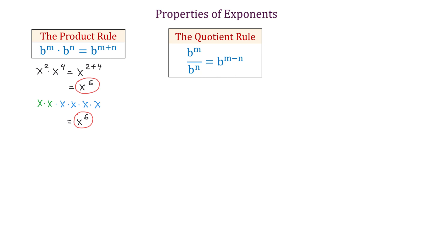For example, x to the seventh power over x squared equals x to the power of 7 minus 2, and this makes x to the fifth power. Now to understand why we subtract the exponents,